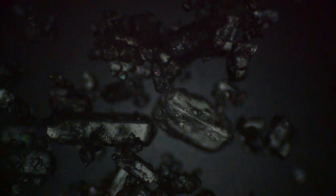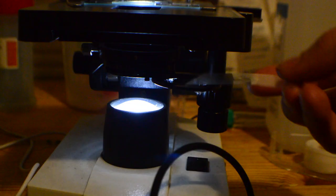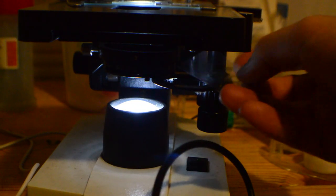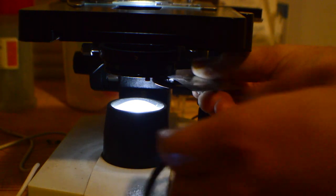Before we look at more samples, let's quickly look at another mod which is adding a dark field. All this really means is making it look like the sample has a black background. For this mod, all we have to do is make an opaque dot on a clear piece of plastic and insert it into the filter holder in the bottom of the microscope. And we need it to be just smaller than the aperture.